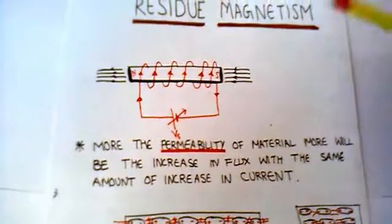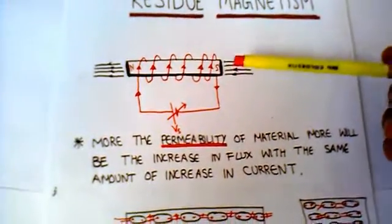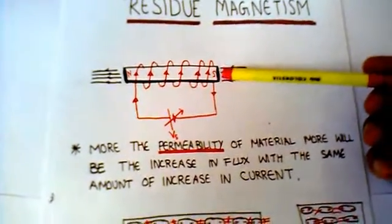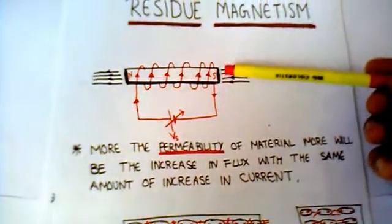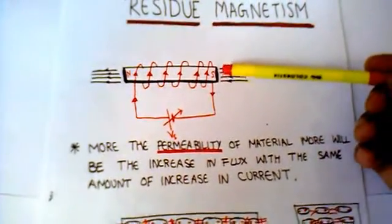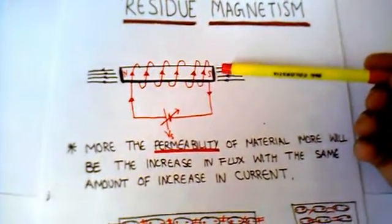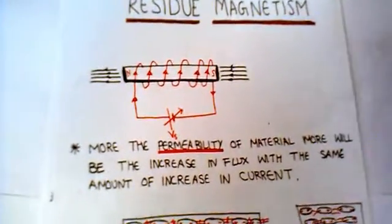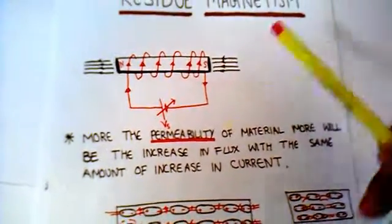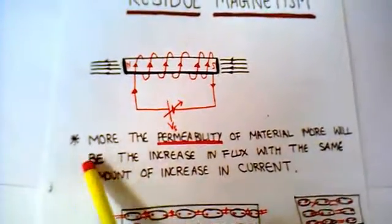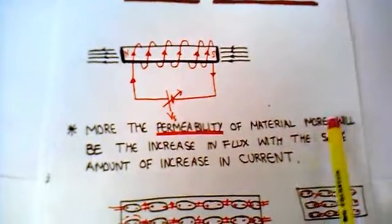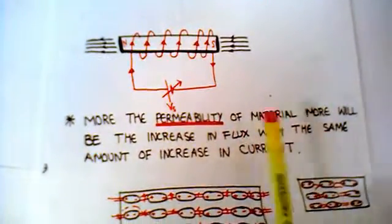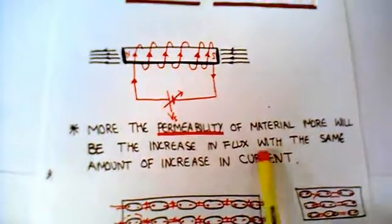If you are good in materials, you will always use a material with the highest permeability. If you use a core with the highest permeability, you will be able to create the strongest magnet. And more is the permeability of the material, more will be the increase in flux with the same amount of increase in current.